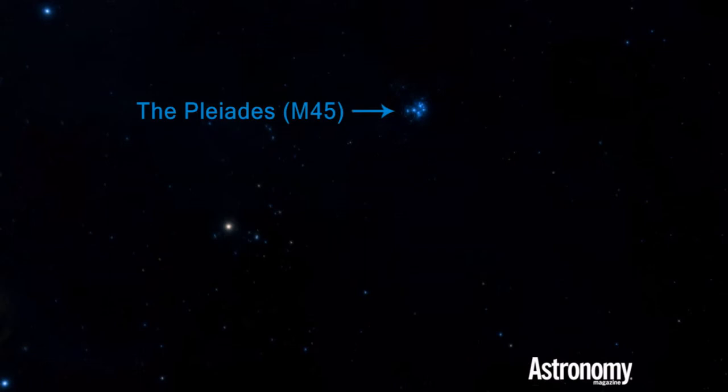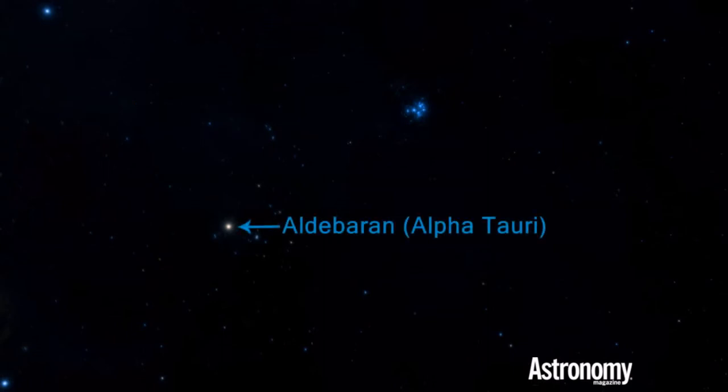The cluster ranks as one of the greatest objects in the sky, because it presents challenges to all observers, whatever their equipment or experience. To locate M45, look about 10 degrees northwest of Aldebaran, the brightest star of Taurus.